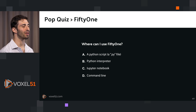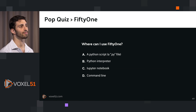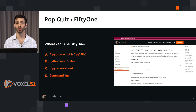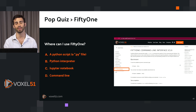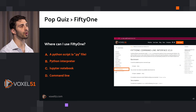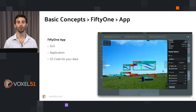Where can you use FiftyOne? The options are: A) within a Python script, B) in a Python interpreter, C) in a Jupyter notebook, or D) from the command line. The answer is all of the above. You can use the FiftyOne library wherever you can write Python code — in a Python script, the Python interpreter, a Jupyter notebook, Google Colab, or a VS Code IPython notebook. FiftyOne also works from the command line, and the docs have an entire section on that. The FiftyOne app is a graphical user interface for your computer vision data — think of it like VS Code for your data.